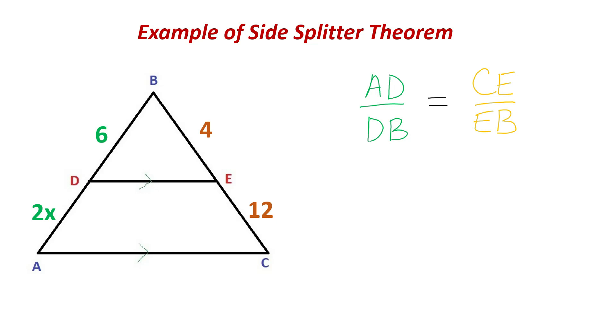So on the green side, my AD is 2X over the DB section. So that line segment is equal to 6. And now I'm going to set that equal to CE, which is 12, over EB, which is 4.